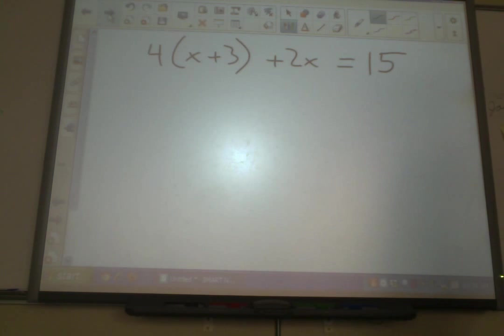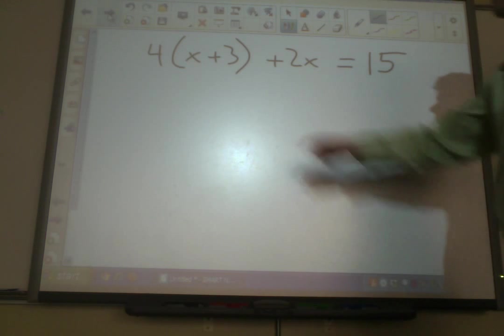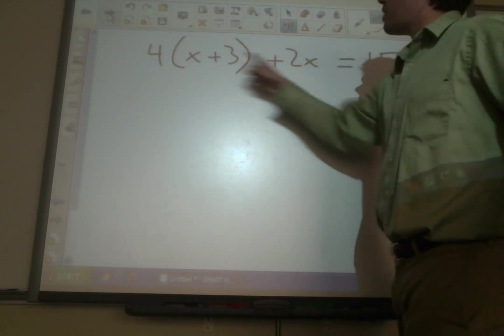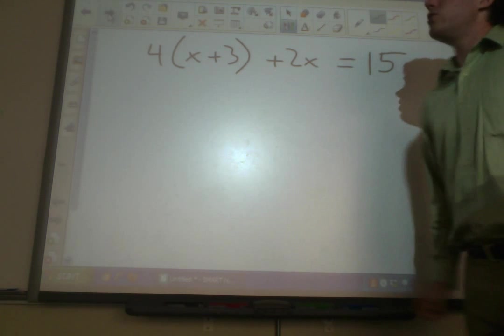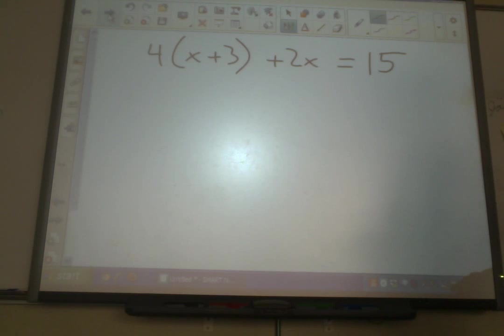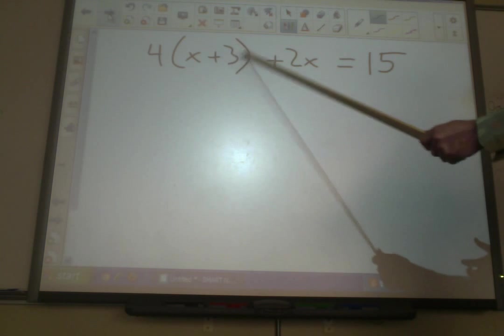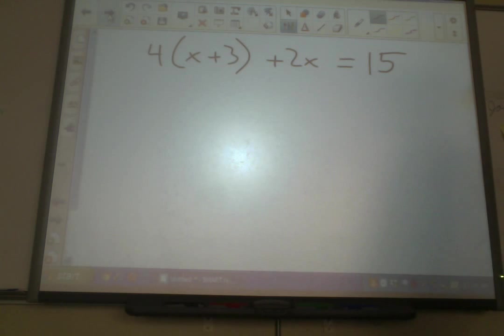Second step is we need to get it down to just one variable. Now, in this problem, look, we do have two different variables. So, here's our first problem where we really have to do something to get down to one variable. Well, what can we do? I already told you this is trapped in the parentheses prison, so we can't just combine like terms here. Here's how we solve the problem. We're going to use our old friend, the distributive property.